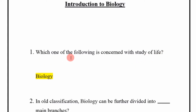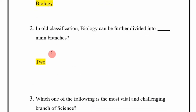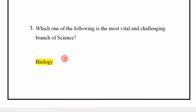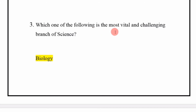In old classification, biology can be further divided into how many main branches? Answer: Two. Next question: which one of the following is the most vital and challenging branch of science? Answer: Biology.